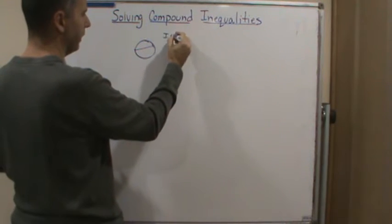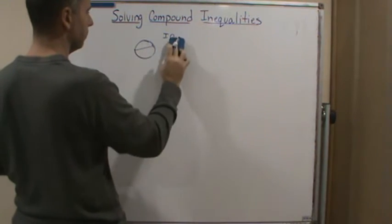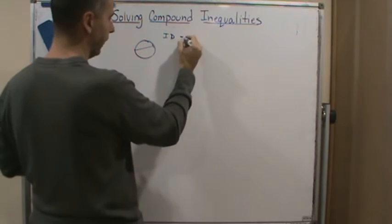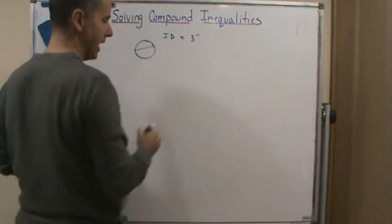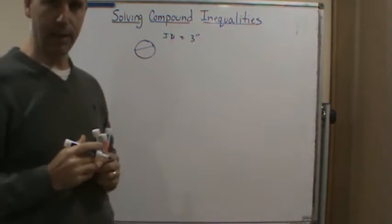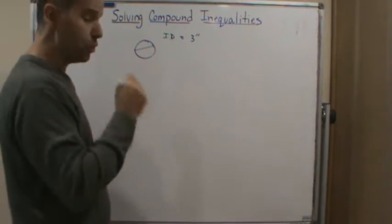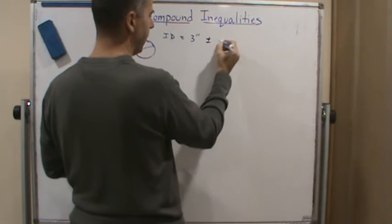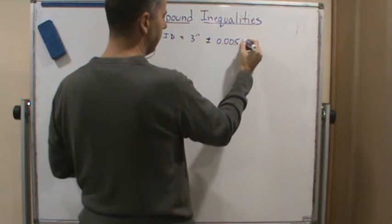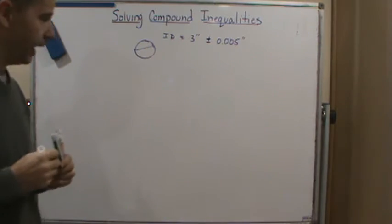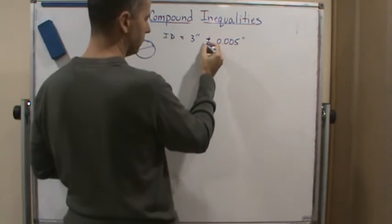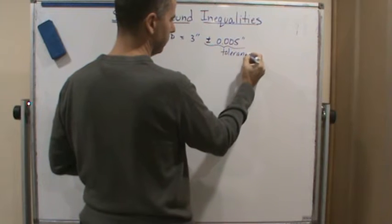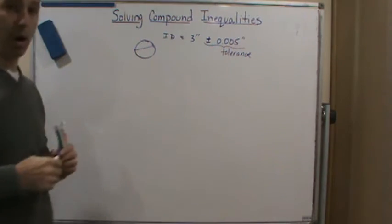so ID for inside diameter, is measured at three inches. That's the measurement it should be at. But then usually on the blueprints, it'll say three inches plus or minus 0.005 inches. And so this is the tolerance. That's the margin of error.